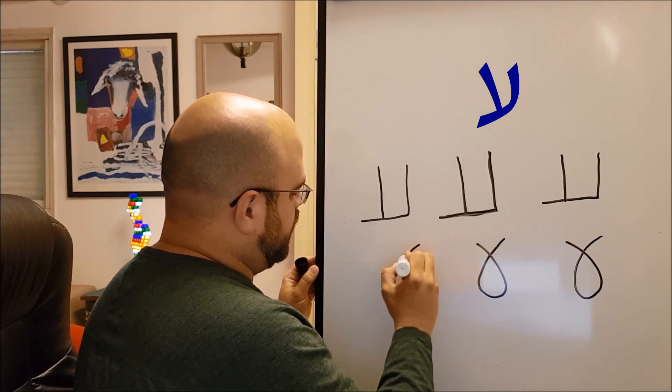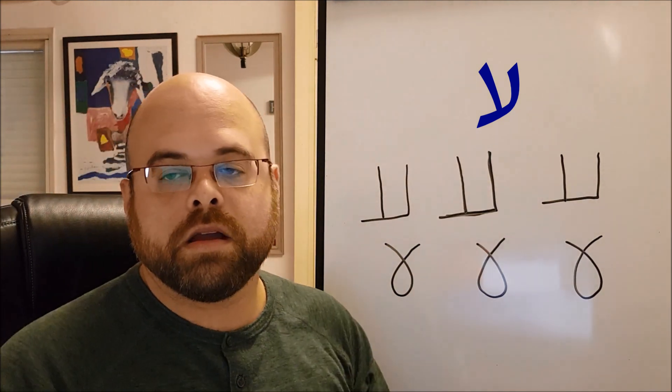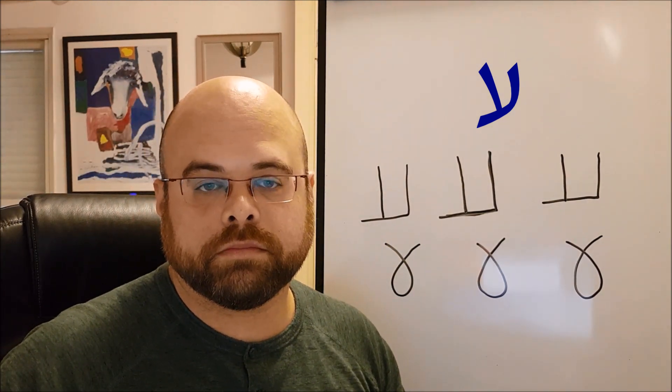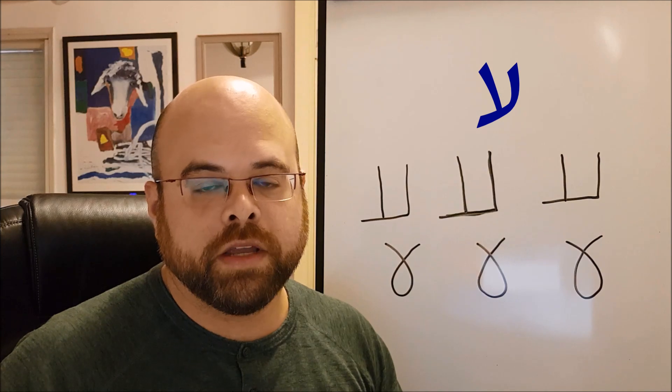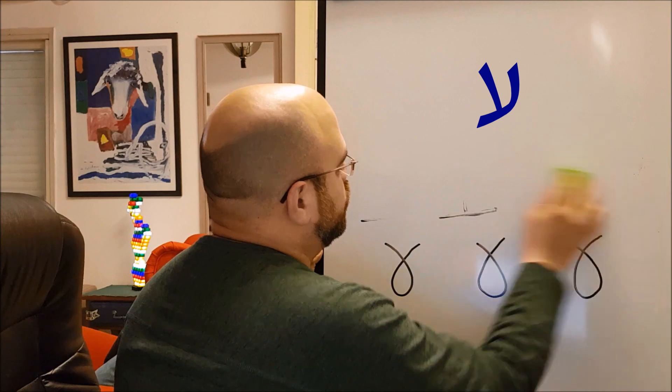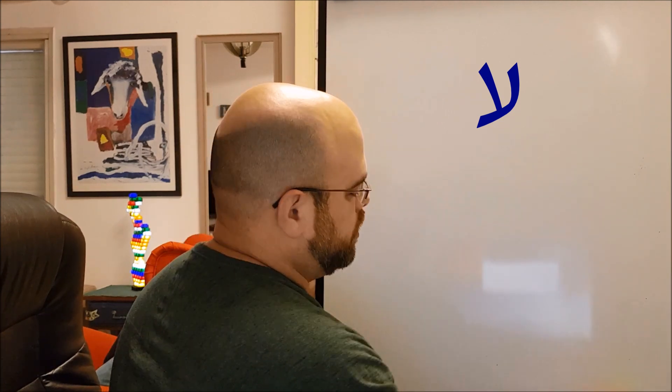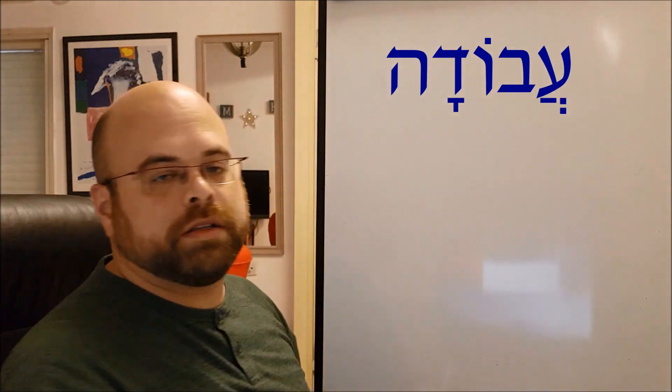And the handwritten version is like a loop, and it goes like this. So this is AIN, the sound AH just like ALIF. Now let's see a word with the letter AIN. This letter, as you can see here, this word is AVODAH. So